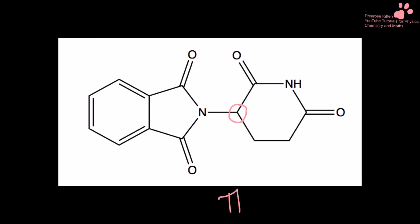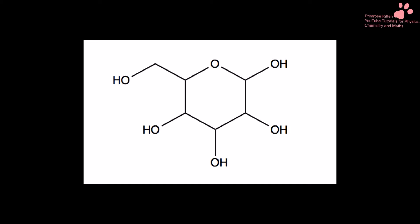Interestingly, just as a point of interest, this is thalidomide. And it is that tricky chiral carbon in the middle there that makes it go from a useful drug into a drug that causes quite a lot of damage - it's the difference in the shape that the chiral carbon gives it. Here we have glucose. Things may have more than one chiral carbon, and you need to be good at identifying them. This is an oxygen, so that's not going to work. This has two hydrogens off it, that's not going to work. But this one, this one, this one, this one, and this one are all chiral carbons.